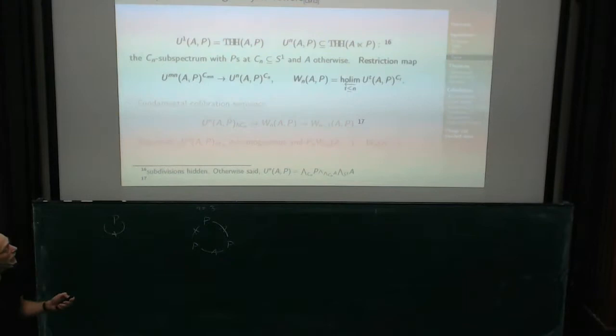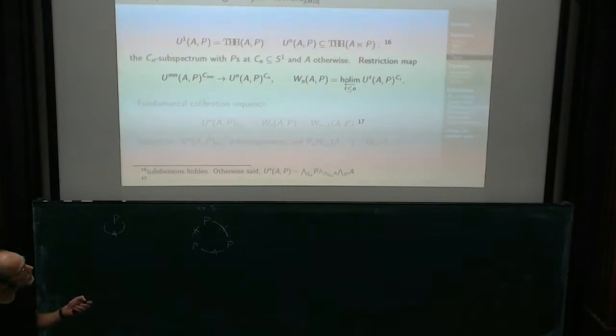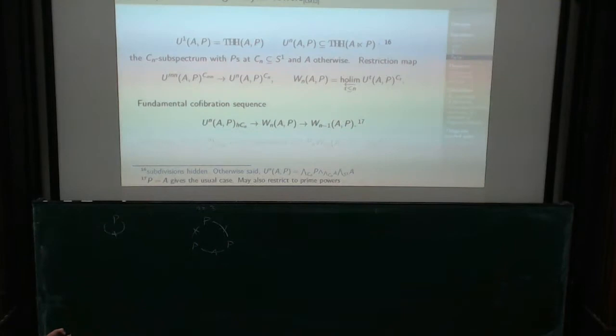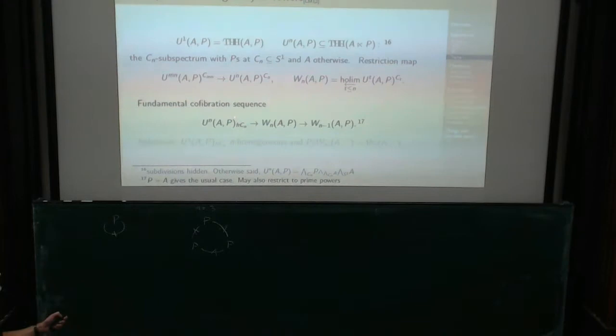W_N is the homotopy limit of all these fixed points of all the U_T's when T is less than or equal to N. What we've seen so far is the case when we only focus on the prime powers, but we can take them all at the same time if we want to. We do have, just as before, a fundamental cofibration sequence where we have what replaces the fixed points of topological Hochschild homology to various degrees.